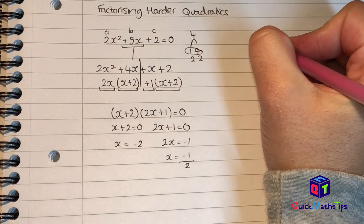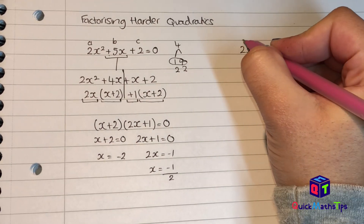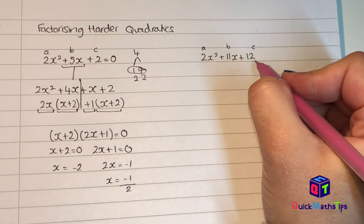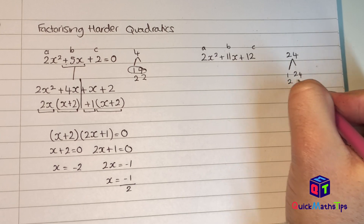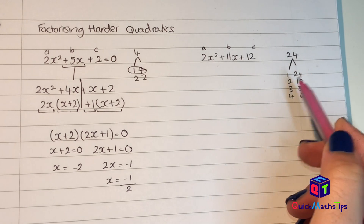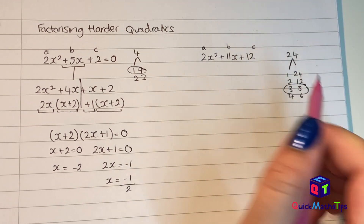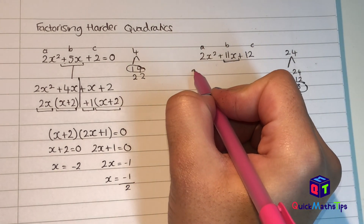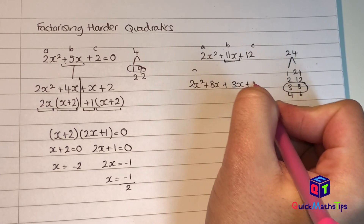Let's do another example: 2x squared plus 11x plus 12. This is my a value, this is my b value, and this is my c value. I'm going to multiply my a and my c: 2 multiplied by 12 gives me 24. The factors of 24 are 1, 24; 2, 12; 3, 8; 4 and 6. Which of these factors add to give me 11? I can pick plus 3 and plus 8. Now I can split 11x into 3x and 8x, so I write 2x squared plus 8x plus 3x plus 12.